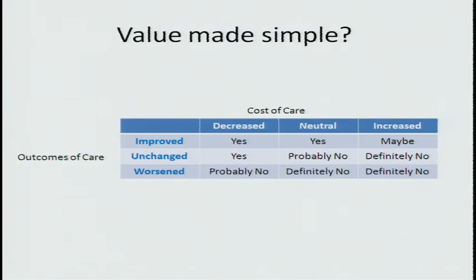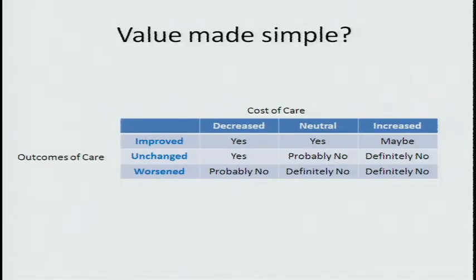On the other hand, if we have something that worsens outcomes and increases cost, we're going to say get that out of here — we don't want to do it. Unfortunately, there's a lot of what we do day-to-day in medicine that does exactly this, but we haven't really analyzed it. There may be some circumstances where it doesn't change outcomes and is cost neutral. So this would be one way to do a very rapid first pass to prioritize things that look likely to be in the upper left-hand corner of this matrix and eliminate those that are more in the lower right.